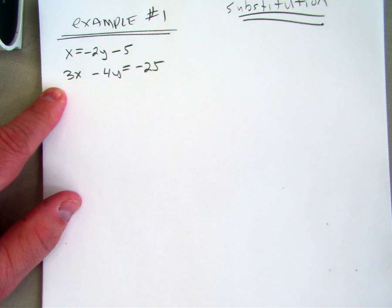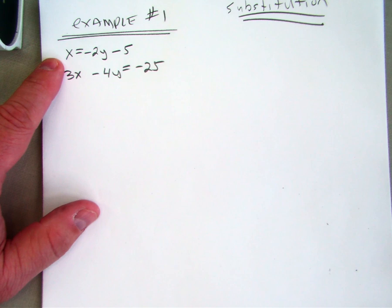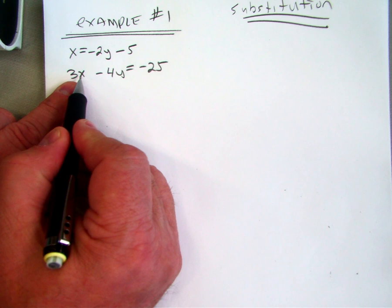So I asked you, what does x equal? x equals negative 2y minus 5. That's what it says. So this x also equals negative 2y minus 5.